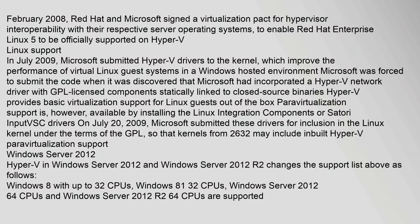In February 2008, Red Hat and Microsoft signed a virtualization pact for hypervisor interoperability with their respective server operating systems, to enable Red Hat Enterprise Linux 5 to be officially supported on Hyper-V. In July 2009, Microsoft submitted Hyper-V drivers to the Linux kernel, which improved the performance of virtual Linux guest systems in a Windows-hosted environment. Microsoft was forced to submit the code when it was discovered that Microsoft had incorporated a Hyper-V network driver with GPL-licensed components statically linked to closed-source binaries. Hyper-V provides basic virtualization support for Linux guests out-of-the-box; para-virtualization support is available by installing the Linux Integration Components or Satori input VSC drivers. On July 20, 2009, Microsoft submitted these drivers for inclusion in the Linux kernel under the terms of the GPL, so that kernels from 2.6.32 may include inbuilt Hyper-V para-virtualization support.